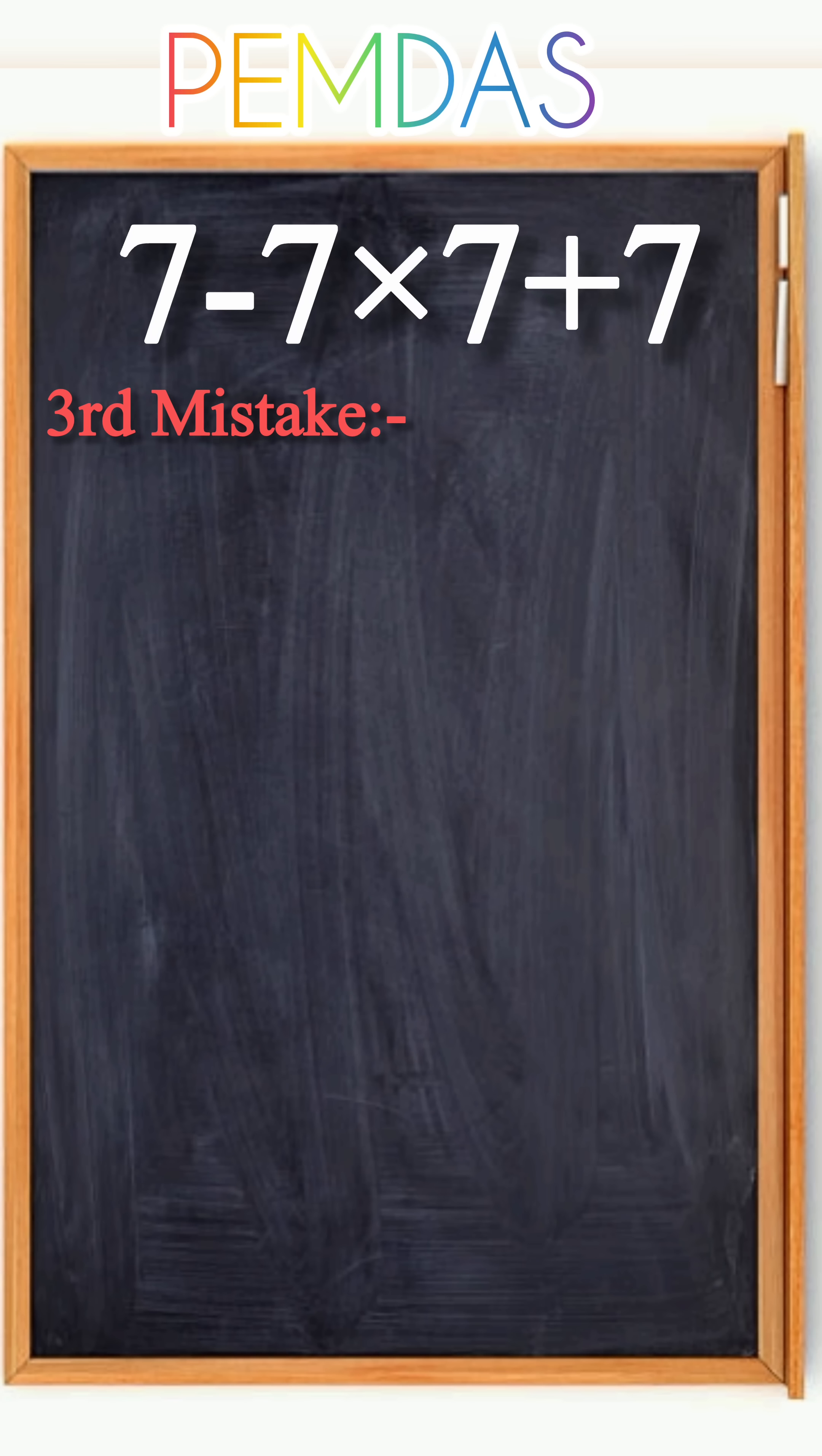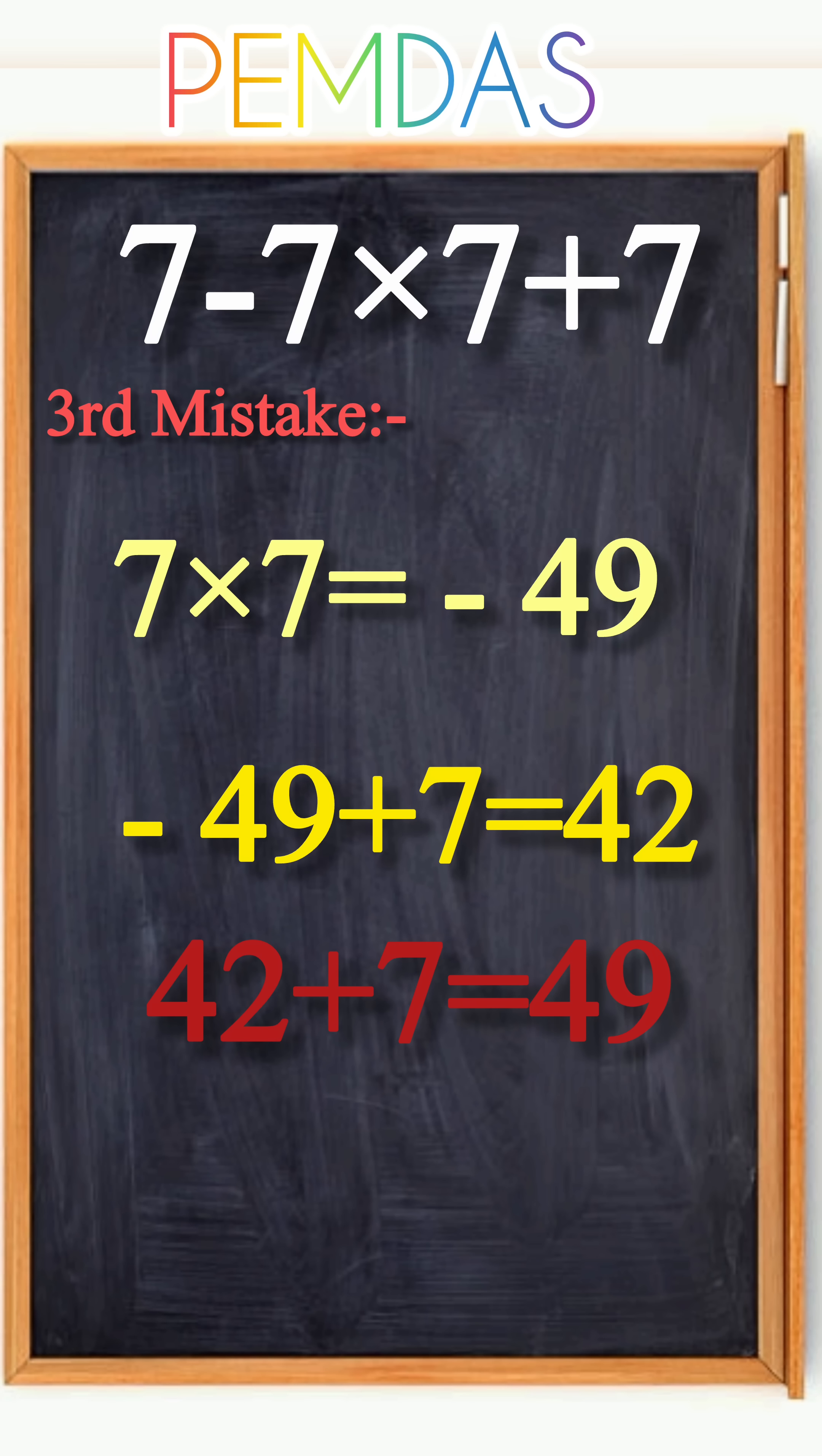The third mistake—the bold but wrong one: they start strong with multiplication, 7 multiply 7 equals 49. Then they add 49 and 7 to get 56, and finally subtract that from 7 to end up with minus 49. Closer, but still not right.